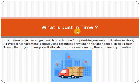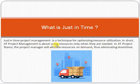Whatever the demand, they produce the product accordingly. If there is no demand, there is no product. If the demand is for five products, they produce five; if ten, they produce ten. JIT in project management is a technique for optimizing resource utilization — using resources only when they are needed. The project manager allocates resources on demand, thus eliminating downtime.